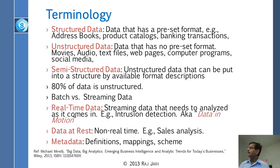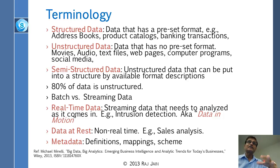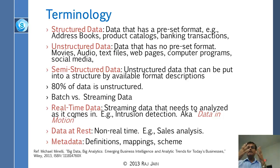Metadata is basically the definitions, mappings, and schema of the data. Data itself is the actual content, and anything about the data is called metadata. For example, in a class database, the fields — name, phone number, and so on — are metadata. The actual names and phone numbers stored are the data.